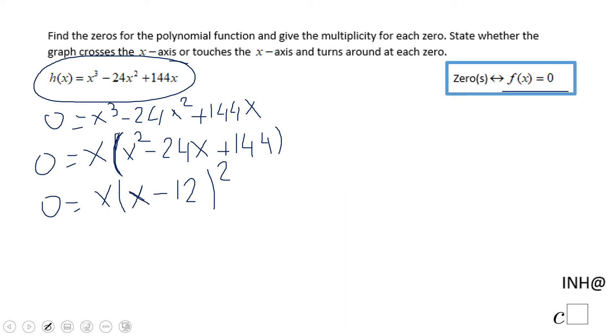After we have the factored form, we can use the zero product property, which tells us x = 0 or x - 12 = 0. So we have one intercept at (0, 0) and the other at (12, 0). These are the solutions of the polynomial equation.